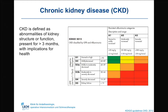Stage one and two include kidney damage with normal or increased GFR, or with decreased or slightly decreased GFR. Moderate and clinically significant stages refer to stage three, four, and five, which include a GFR of 30 to 50 milliliters per minute, 15 to 29 mls per minute, and lower than 15 mls per minute.